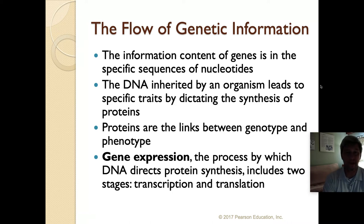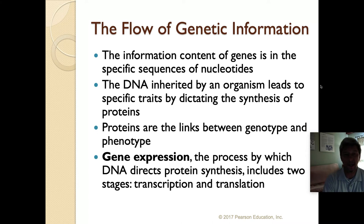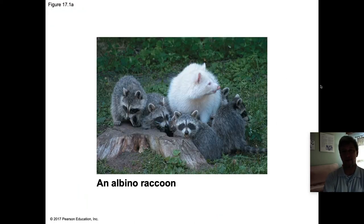That sequence is inherited from your parents, so the proteins your parents produce are the same as the proteins you produce. This is true in all organisms. It's the DNA that leads to your given traits — why you look the way you do, why you have the blood type you have. The proteins have the direct link between the genotype, your DNA sequence, and the phenotype.